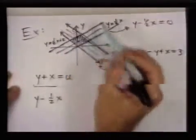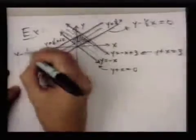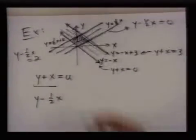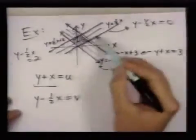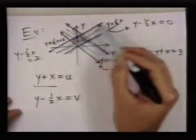And on this line here, y minus 1 half x is equal to two. So this is another important quantity, and I'll call this v. So v tells me which of these parallel lines I'm sitting on.